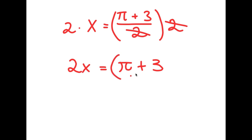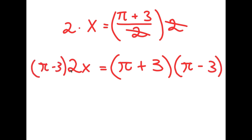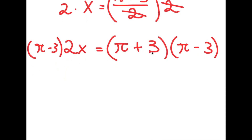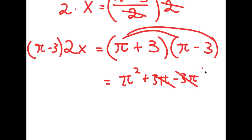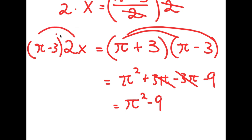From here, I'm going to multiply both sides by pi minus 3. So I have pi minus 3 times 2x equals pi plus 3 times pi minus 3. For the right side, I distribute and get pi squared plus 3pi minus 3pi minus 9 — the 3pi terms cancel — giving pi squared minus 9. For the left side, distributing 2x gives 2x times pi minus 6x.